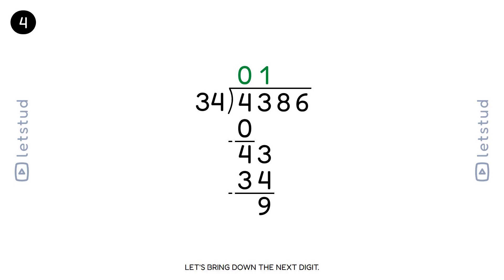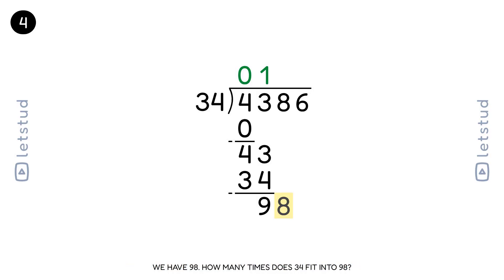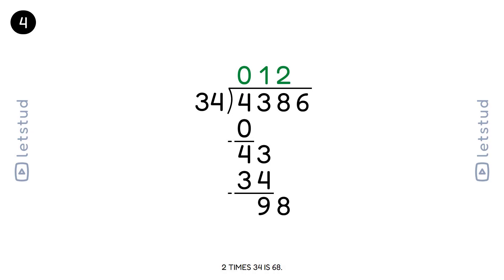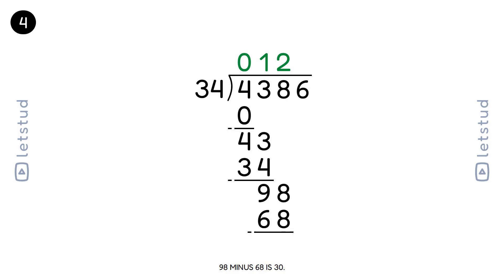Let's bring down the next digit. We have a remainder of 9 and bring down the 8 to make 98. 34 fits into 98 two times. 2 times 34 is 68. 98 minus 68 is 30.